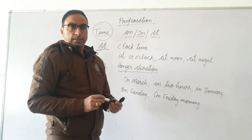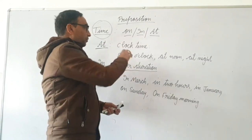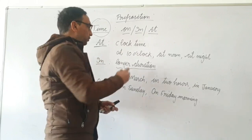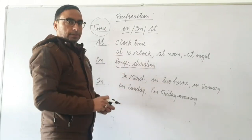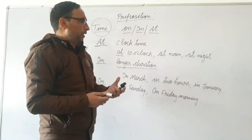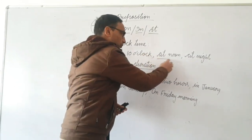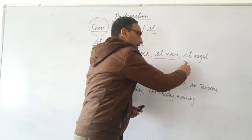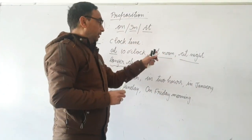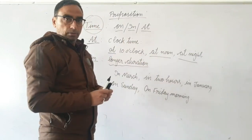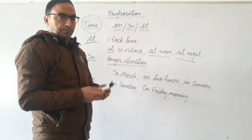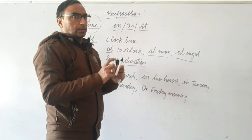Whenever we are talking about clock time or fixed time, we use 'at' — such as at 10 o'clock, at 5 o'clock, at 9 PM, at noon, at night. Be very careful: it is 'at night' and 'at noon', not 'at evening'. We use 'at' for these fixed time expressions.